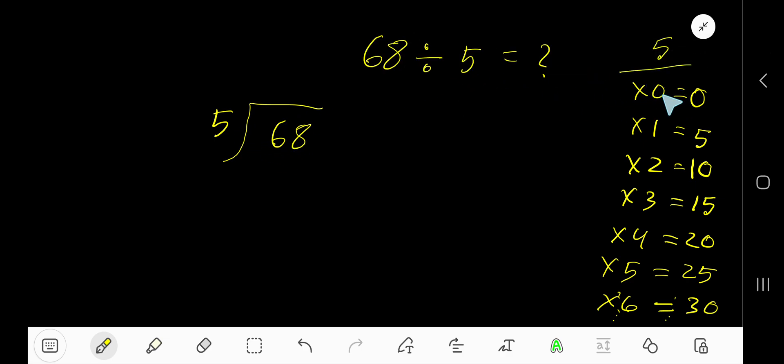5 times 0 equal to 0. 5 times 1 equal to 5. 5 times 2 equal to 10. 5 times 3 equal to 15.